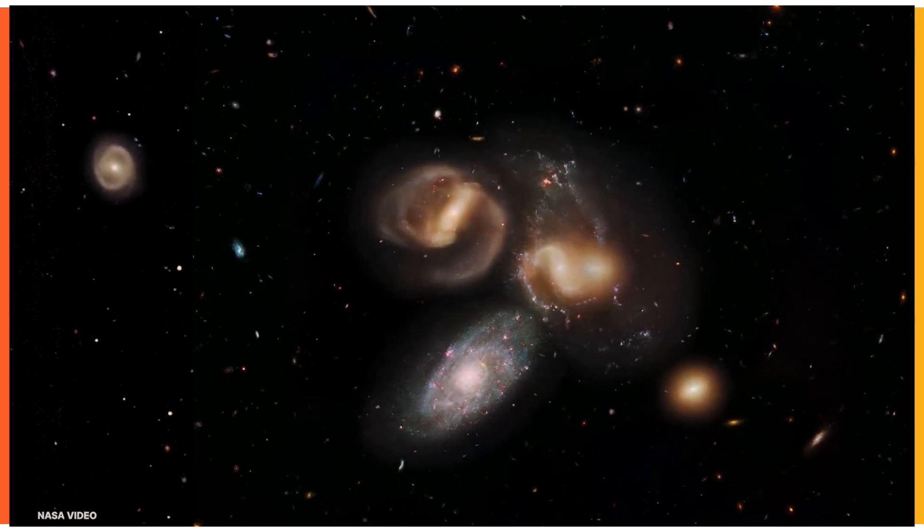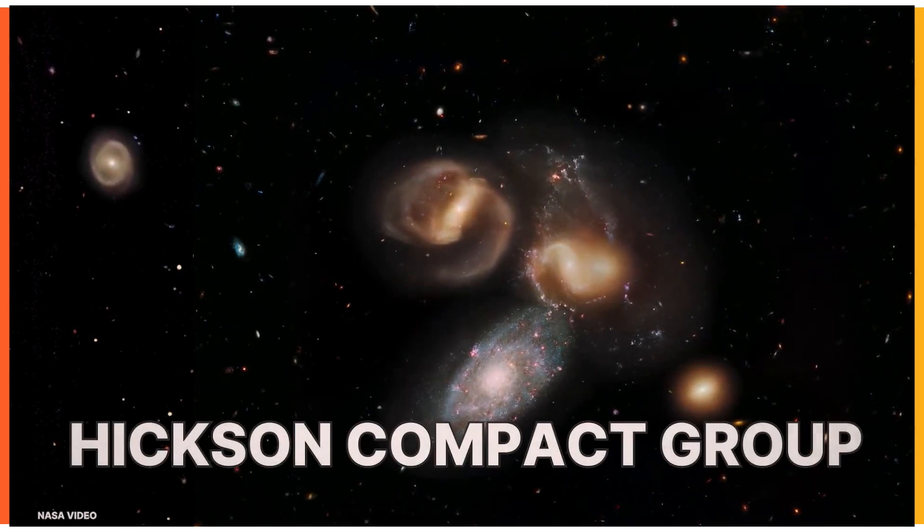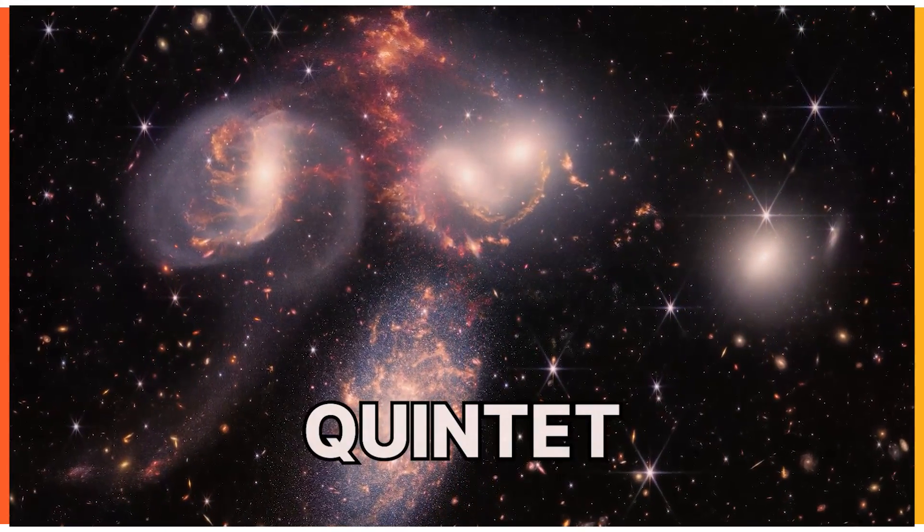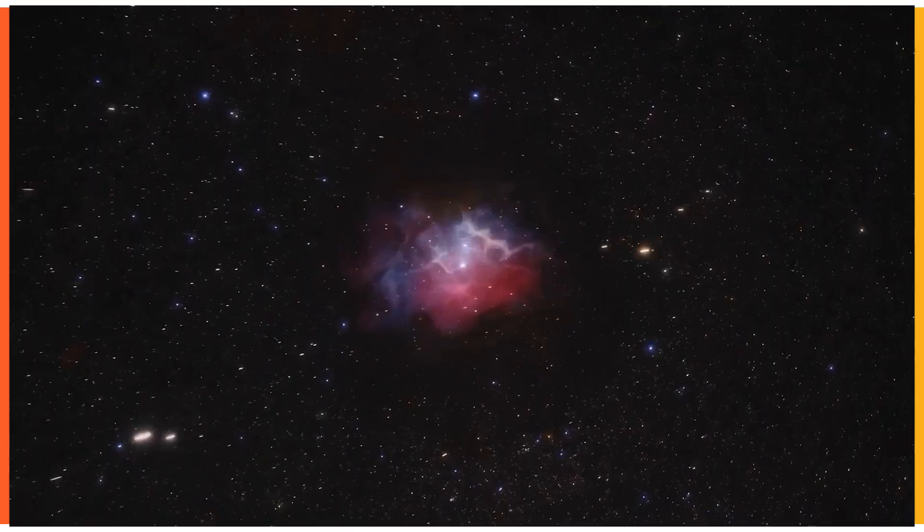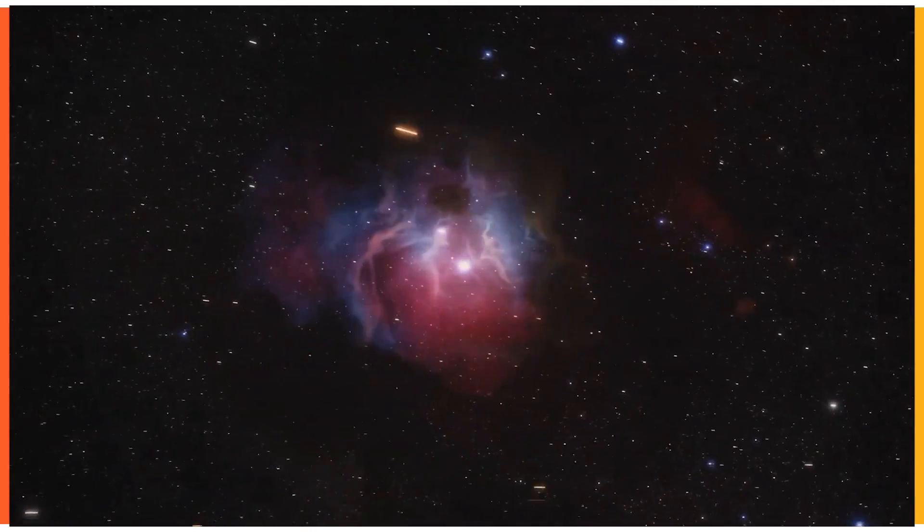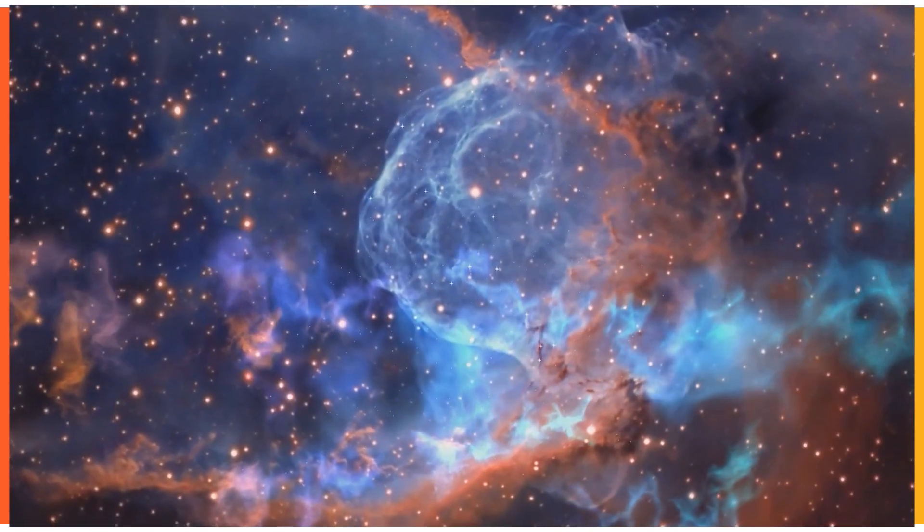The five galaxies of Stephan's quintet are also known as the Hickson Compact Group. It's funny, we call them a quintet, but only four of the galaxies in this image are actually close together. Studying these galaxies helps scientists to better make sense of structures which are seen in a much more distant universe.